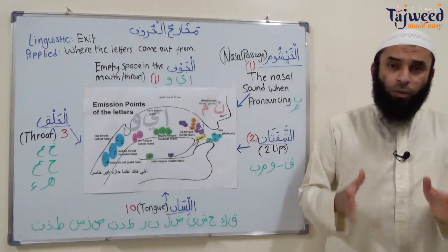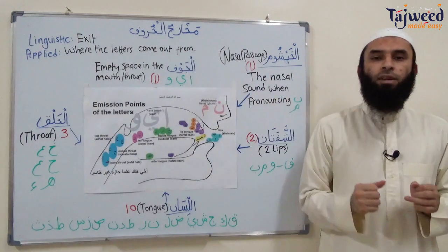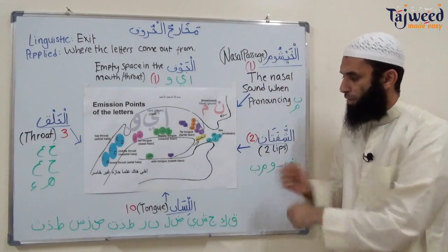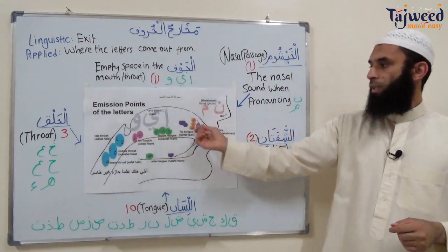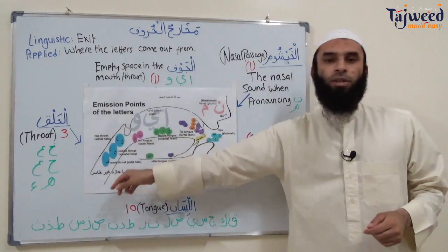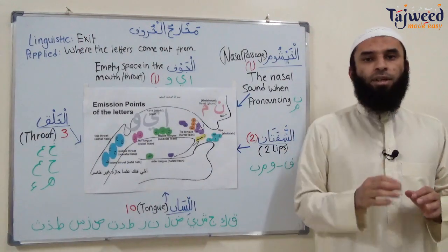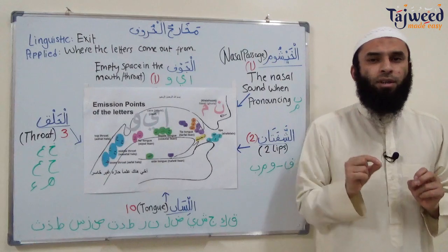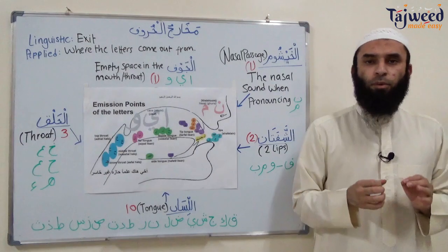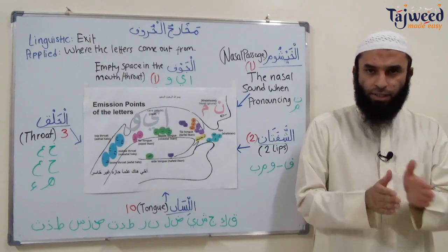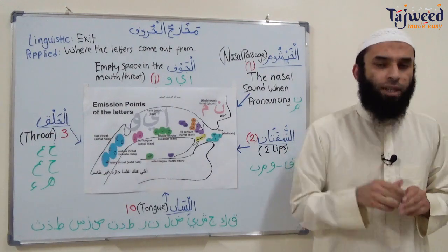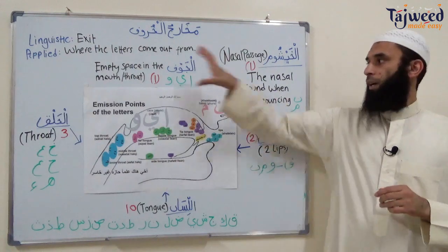In summary, this is مَخَارِجُ الْحُرُوفِ. The five areas are: الْجَوْف، الْخَيشُوم، الشَّفَتَان، اللِّسَان، and الْحَلْق — the empty space, nasal passage, two lips, tongue, and throat. Inside these five areas there are 17 different specific مَخَارِج points. So from the 28 letters in the Arabic language, there are 17 different areas where the letters can come out from — 17 different points in five different areas.